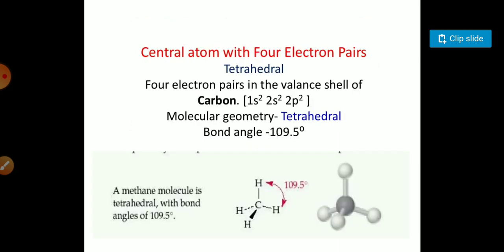Next is the central atom with four electron pairs. The geometry is tetrahedral. In CH4, the carbon has electronic configuration 1s2 2s2 2p2 with the tetrahedral structure, and the bond angle between hydrogen atoms is 109.5 degrees.